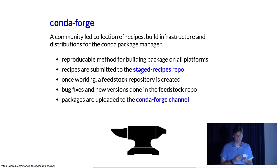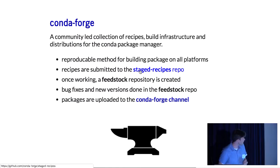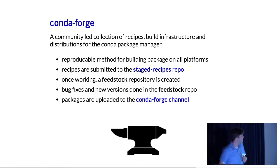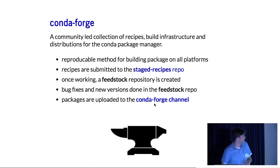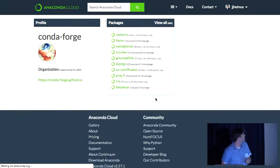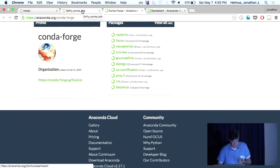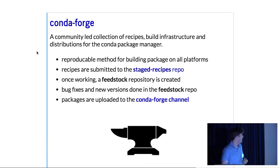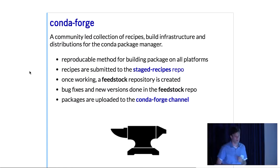Once your pull request is merged, scripts create a feedstock — a separate repository with just that recipe. That feedstock repository rebuilds the packages and uploads them to the Conda Forge channel, which has 482 packages. Bug fixes or new versions are handled in the feedstock repository, so you don't need 100 people all working in one repository.